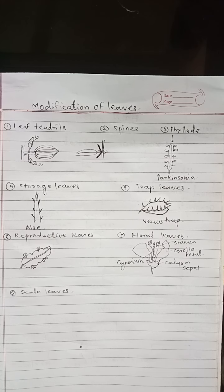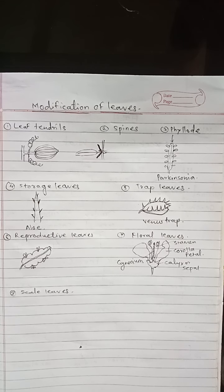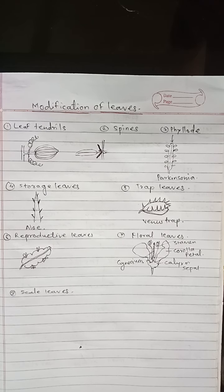In wild pea plant, i.e. Lathyrus aphaca, the entire leaf gets modified into tendrils. While in Pisum sativum, i.e. pea plant, and sweet pea, the terminal leaflets are modified into tendrils.